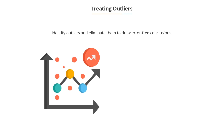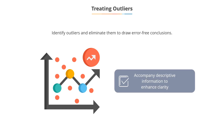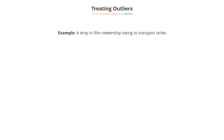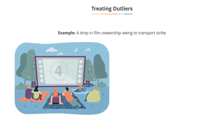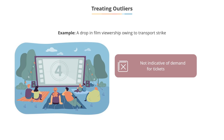Outliers in the data set should be identified and possibly be eliminated to draw error-free conclusions. When outliers are to be included, charts should be accompanied by descriptive information to enhance clarity. For example, a drop in the number of viewers of a film on a particular day owing to a transport strike is not indicative of the demand for tickets.